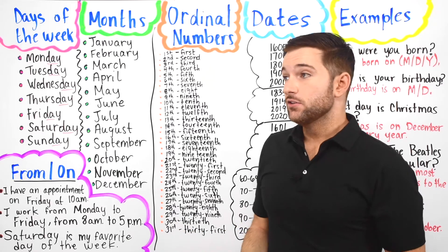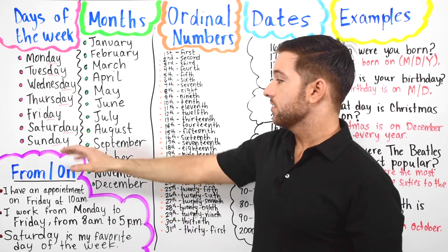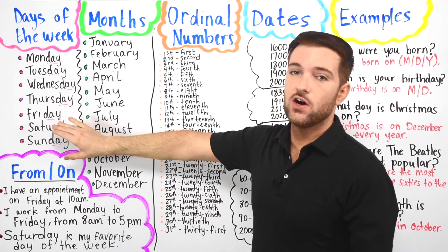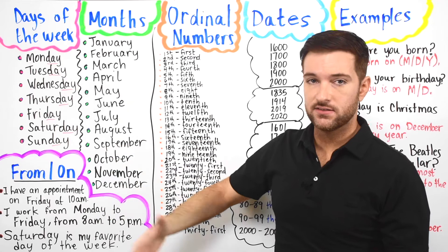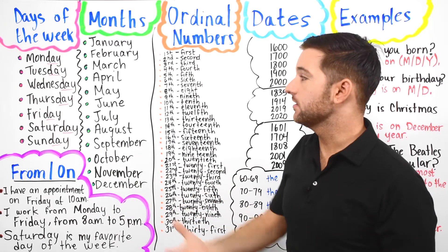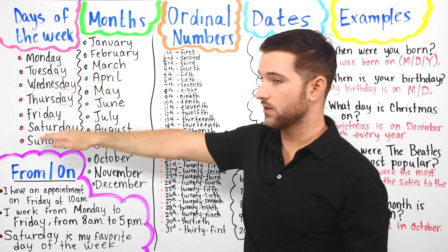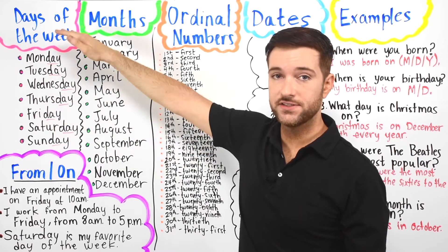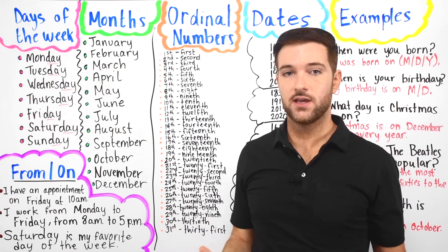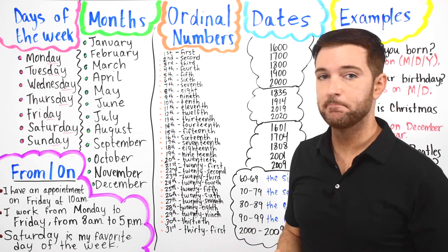Americans typically call Saturday and Sunday the weekend — that's when we have free time. The weekday is when we work. All seven days together we just call the week, and there are 52 weeks in a year.